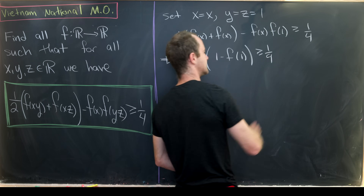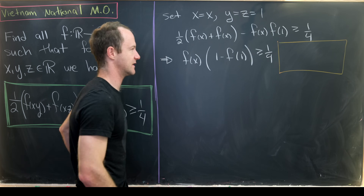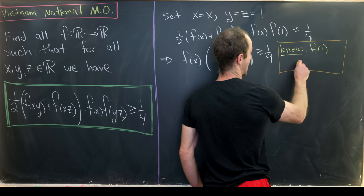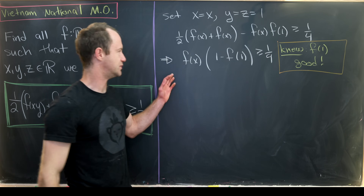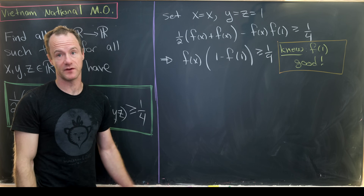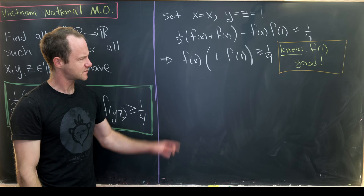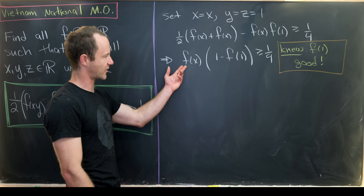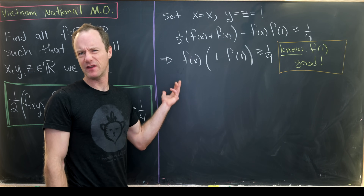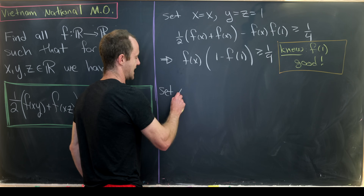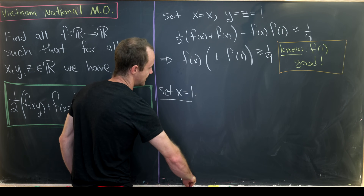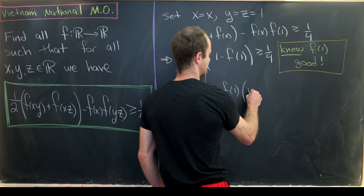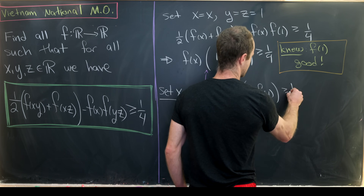In the best-case scenario, if we knew what f(1) is, we'd get an inequality just involving the function itself. We can get an inequality involving f(1) by setting x = 1. Plugging x = 1 in gives us f(1)·(1 − f(1)) ≥ 1/4.